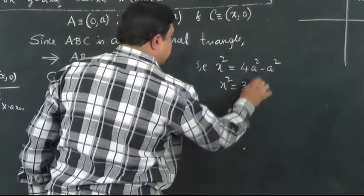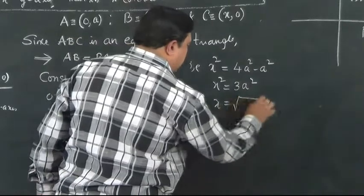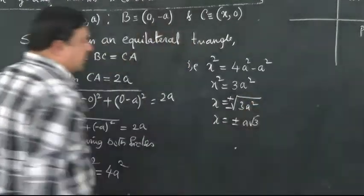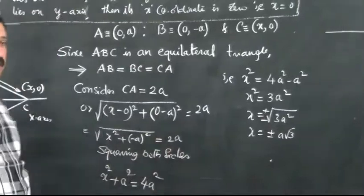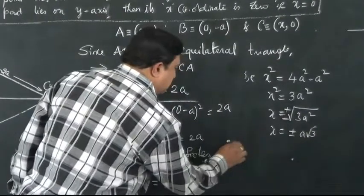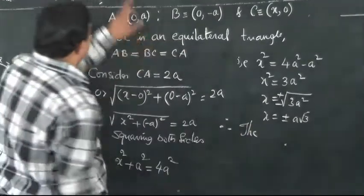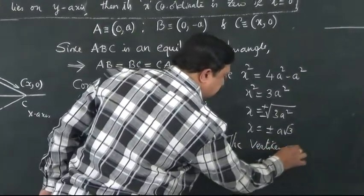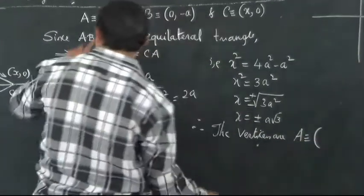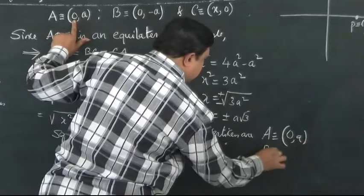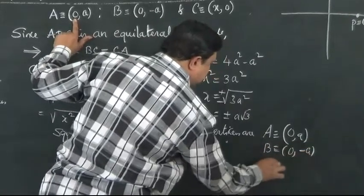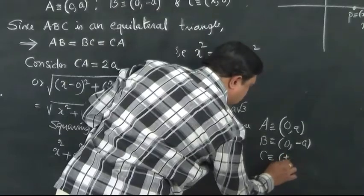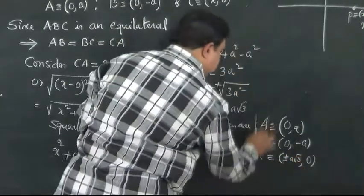From x² = 3a², we get x = ±√(3a²), which gives x = ±a√3. So x can be either +a√3 or −a√3. Therefore, the vertices of the triangle are: A = (0, a), B = (0, −a), and C = (±a√3, 0).